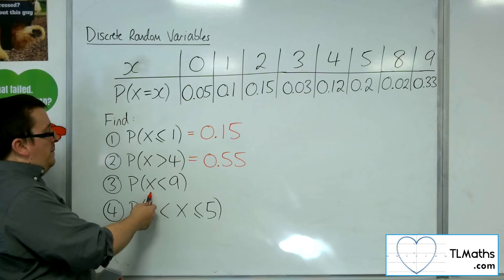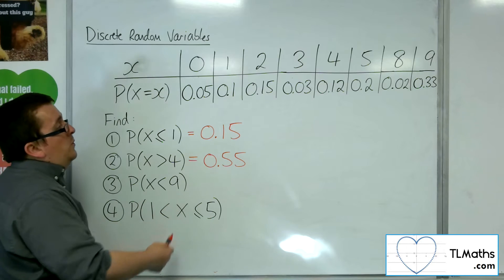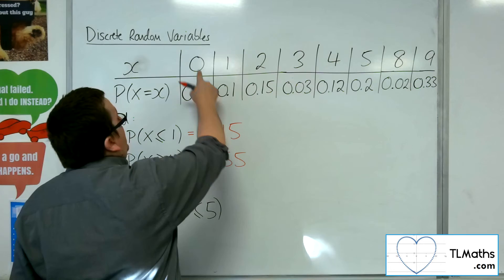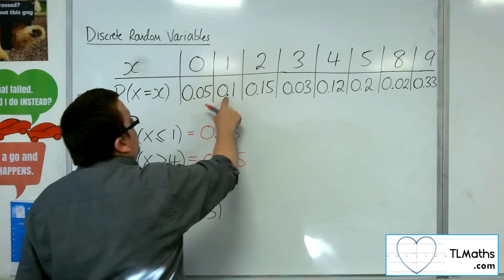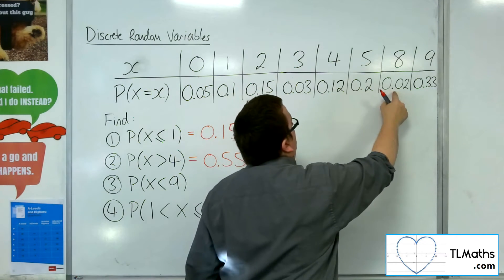So what's the probability of scoring less than 9? So if it's scoring less than 9, then it's 0, 1, 2, 3, 4, 5, or 8.